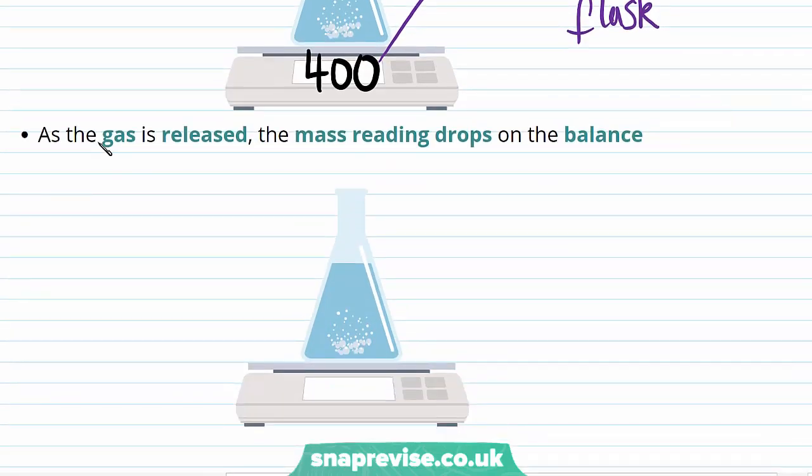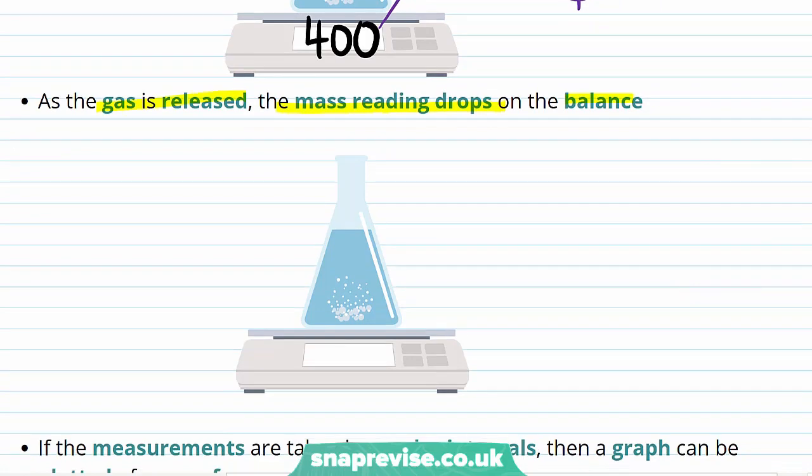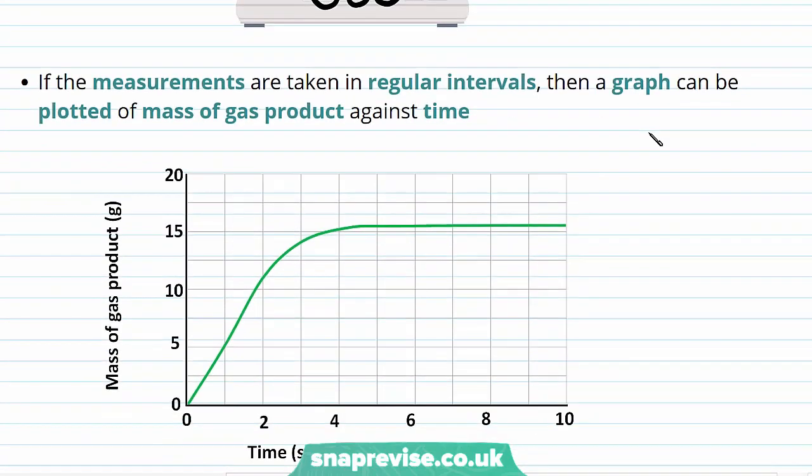As the reaction happens and gas is released, the mass reading will drop on the mass balance, indicating the mass that is lost due to the gaseous product.